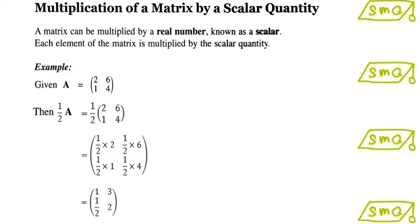Given that matrix A consists of 2, 1, 6, and 4, then half A will be equal to half multiplied by 2 and the other elements in the matrix. Our final answer will be 1, half, 3, and 2.